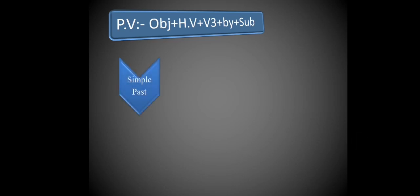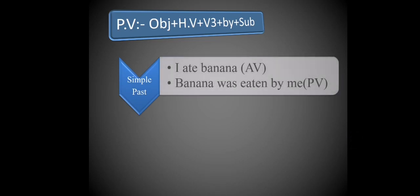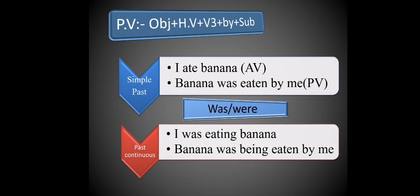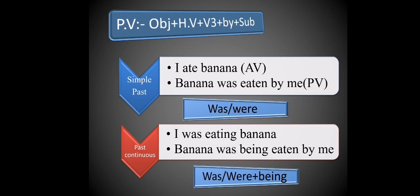Next, simple past tense structure: Subject + V2 + Object. Example: 'I ate banana.' For simple past, the helping verb is 'was/were.' So: 'Banana was eaten by me.' Similarly, past continuous: 'I was eating banana.' Since it is continuous, add 'being.' So: 'Banana was being eaten by me.'